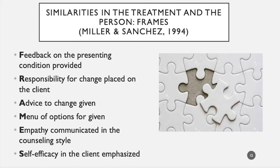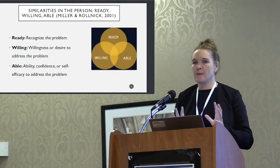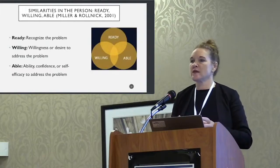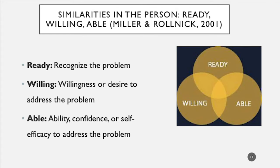This next model is called Ready, Willing, and Able, from Miller and Rollnick's motivational interviewing book. It's entirely about processes within the person related to change initiation. A person needs to recognize there's a problem; even if they recognize it, they also have to be willing to address it; and even if they're ready and willing, they also have to have the ability, the confidence, the recovery capital — those resources to take specific action toward addressing the problem.